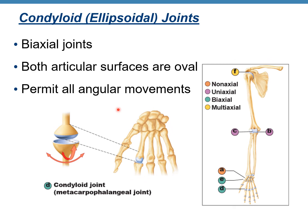Condyloid joint — it's a biaxial joint. Both articular surfaces are oval and permit all angular movements. An example is the metacarpophalangeal joint — the joint between your fingers and your metacarpals — giving greater freedom of movement in two planes.